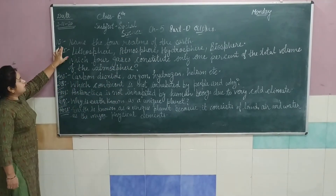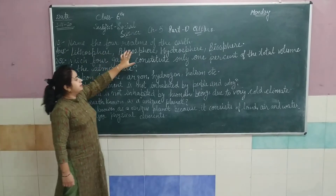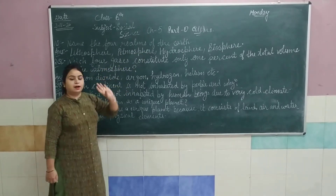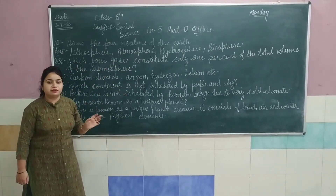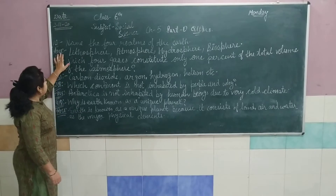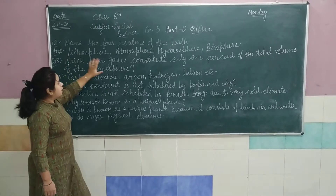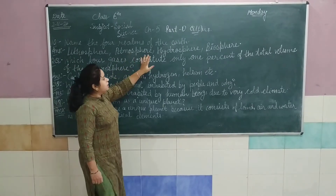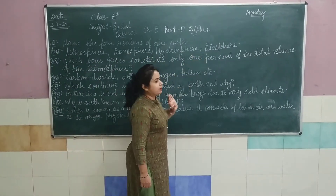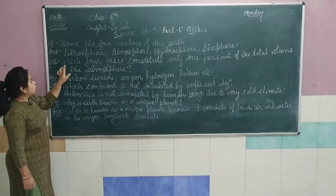First question is: name the four realms of the Earth. Earth ke chaar realms ke naam likhne hain. Answer is: lithosphere, atmosphere, hydrosphere, and biosphere.